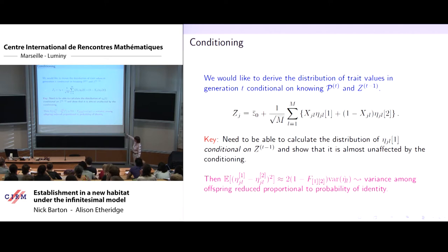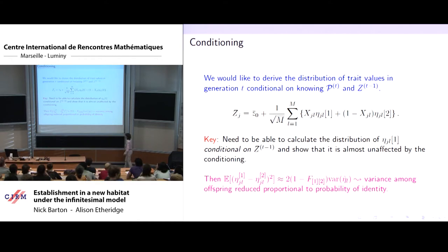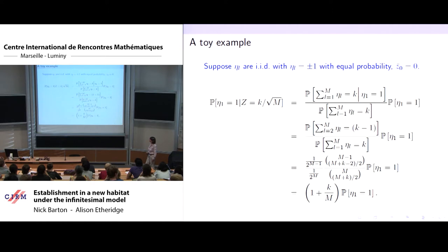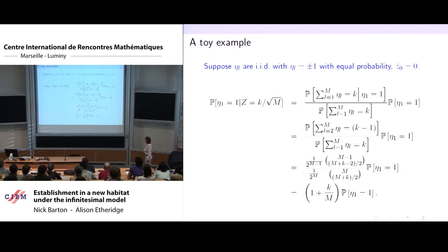The probability of identity is all the information we need, along with the variance in the ancestral population, to determine the variance among offspring. So provided knowing all traits up to generation T-1 doesn't tell me much about individual allelic states, we've got the infinitesimal model: trait Z_J will be normally distributed around the mean of the parents, with variance (1 - F_12) times the variance in the ancestral population.